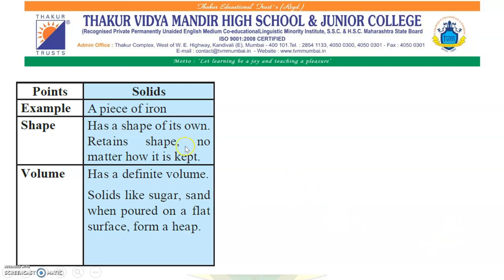Let us summarize. Solids — example: a piece of iron. Shape: solids have their own shape; they retain their shape no matter how they are kept. Volume: solids have a definite volume. Solids like sugar and sand, when poured on a flat surface, form a heap.